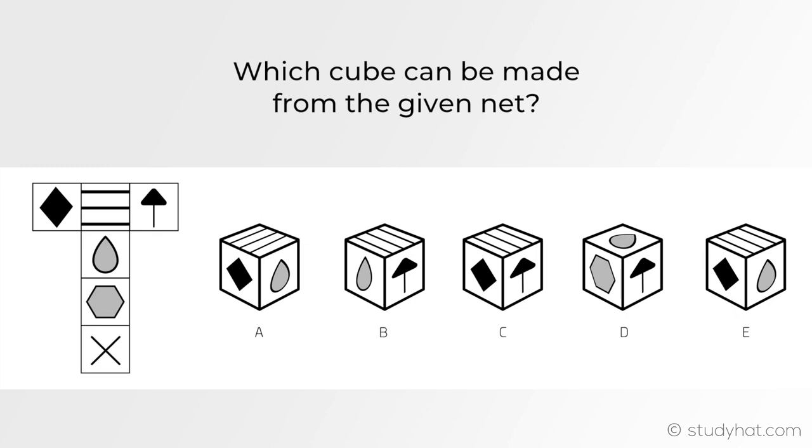Moving on to the next question. Which cube can be made from the given net? What we need to look for is any obvious cubes which can't be correct. So looking at the numbered figure, we know that any opposites won't be seen together.